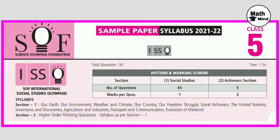International Social Studies Olympiad Class 5, Sample Paper 2021-22. This is the question pattern, marking scheme and syllabus. Please take a screenshot.